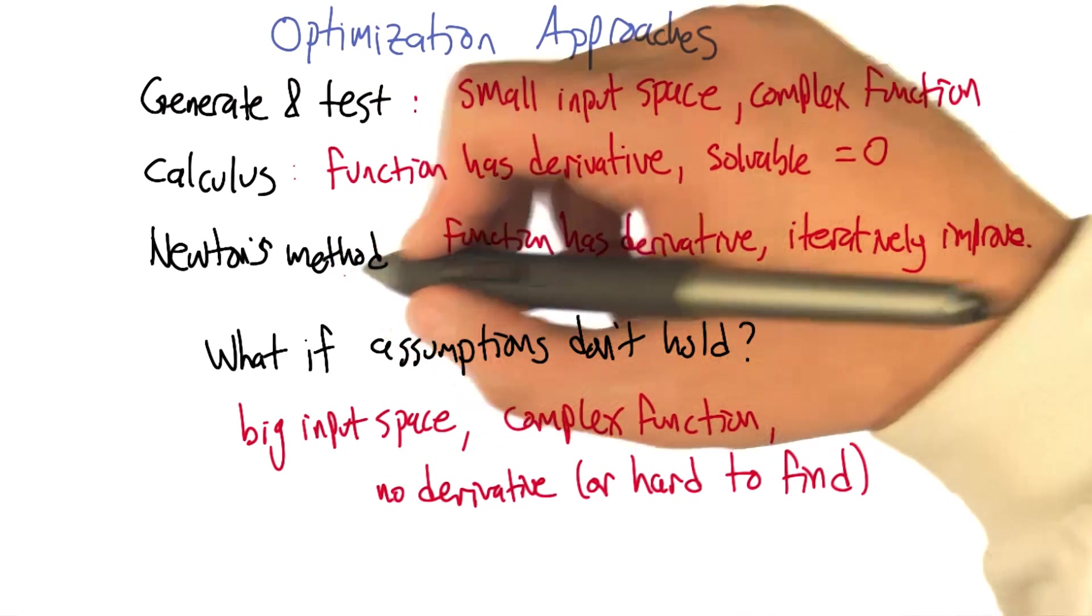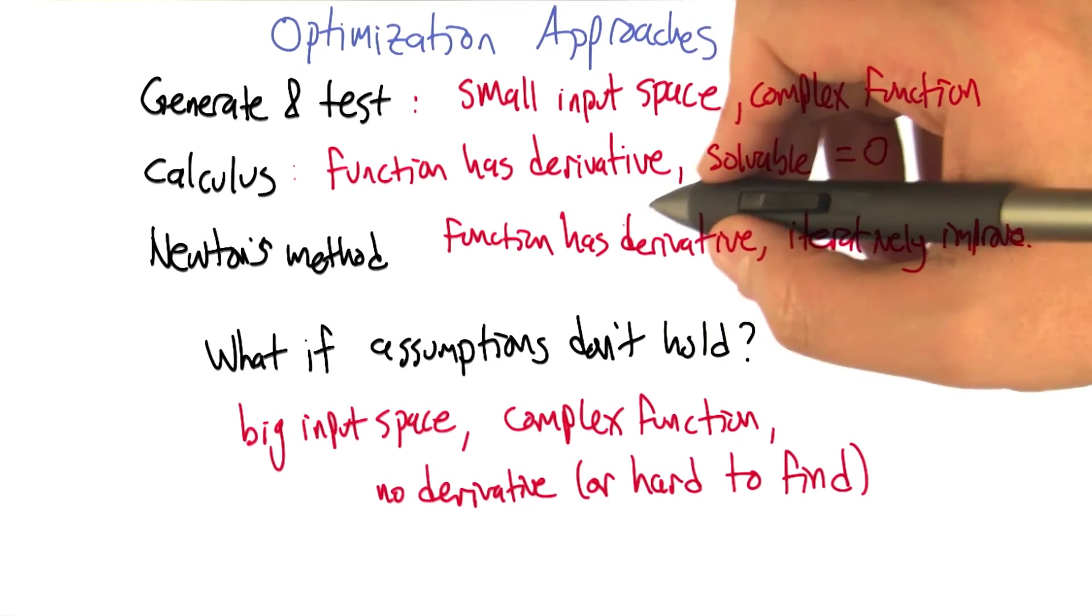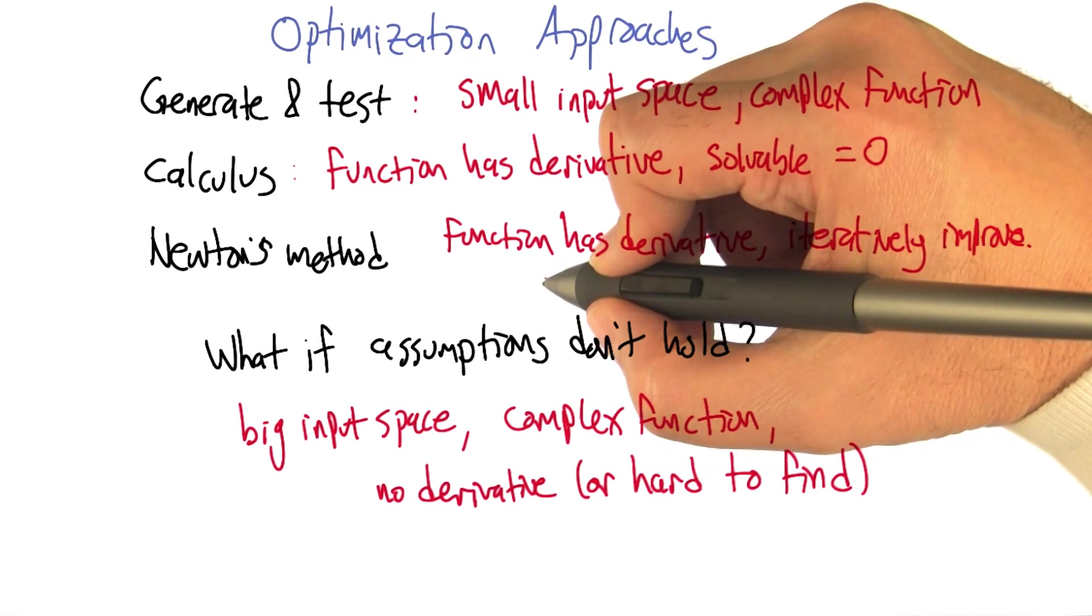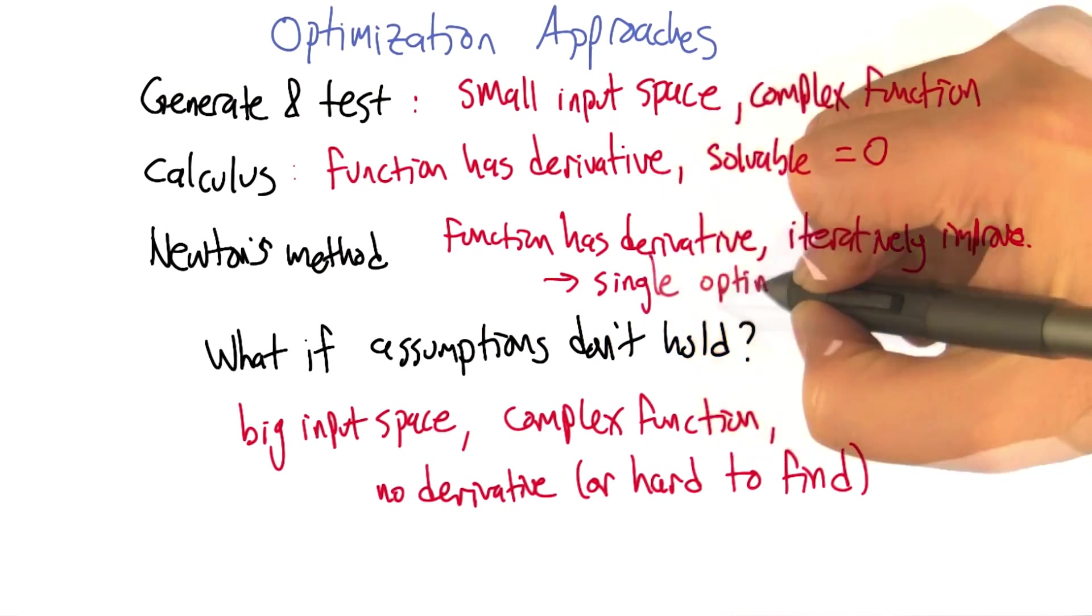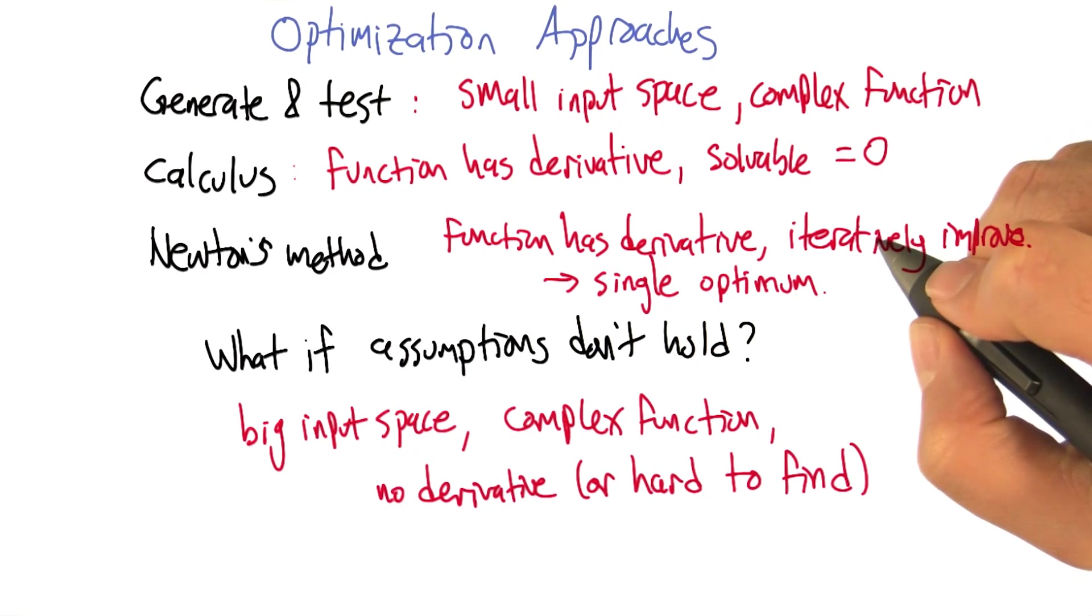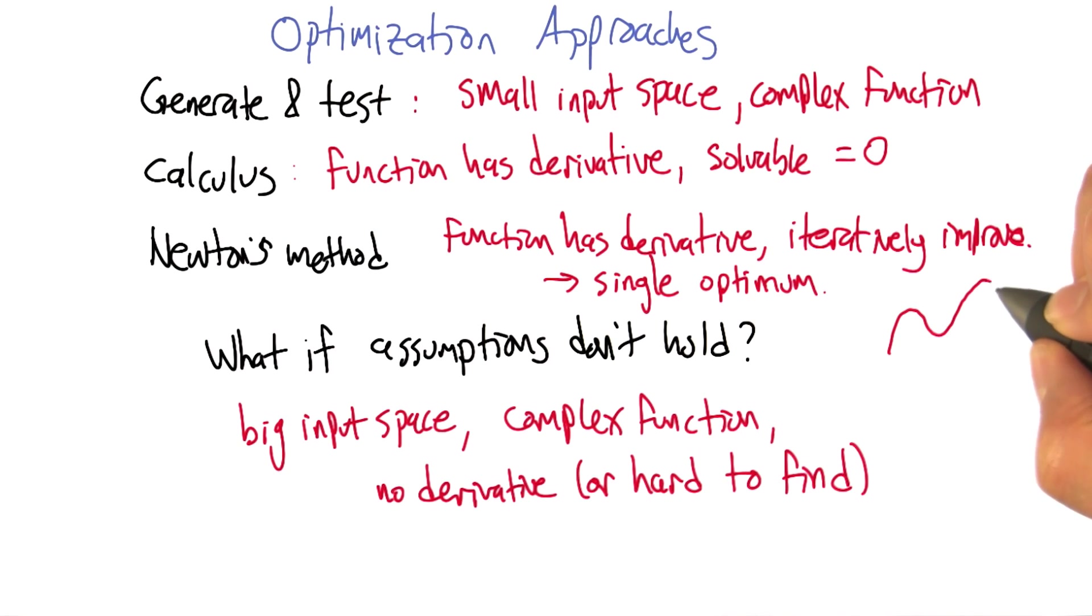Which is that the function has a derivative iteratively improved, and it really wants you to have just a single optimum. Because even Newton's method can get stuck if it's in a situation where you have a curve, say like that. Because Newton's method is just going to hone in on the local peak.